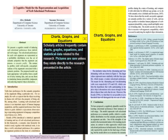Scholarly articles frequently contain charts, graphs, equations, and statistical data related to the research. Pictures are rare unless they relate directly to the research presented in the article.